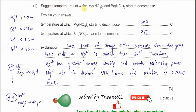For part two, suggest the temperatures at which magnesium nitrate and barium nitrate start to decompose. Compare with calcium nitrate, which decomposes at 500°C. Magnesium nitrate has lower thermal stability, so it decomposes at a lower temperature — roughly about 300°C. Barium nitrate has greater thermal stability, so it decomposes at a higher temperature, more than 500°C. The actual value is about 877°C; you don't need to follow exactly, but for magnesium put 300–400°C and for barium higher than 500°C.